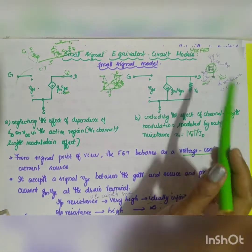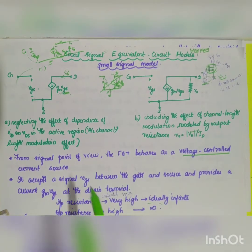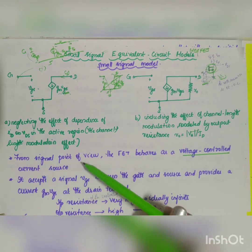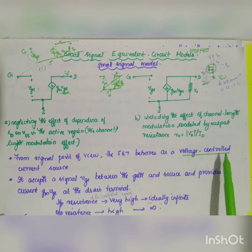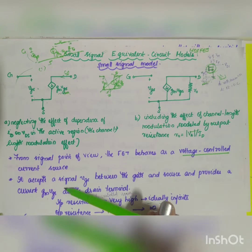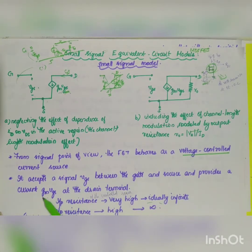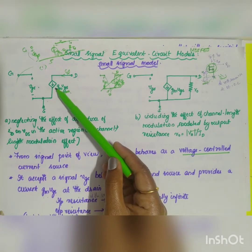In the second case, including the effect of channel length modulation, you are going to add a resistor R naught in parallel. These are the different two diagrams given in your text.